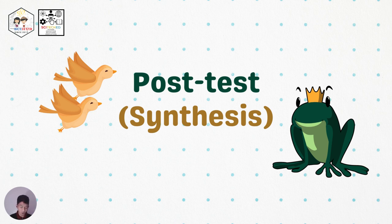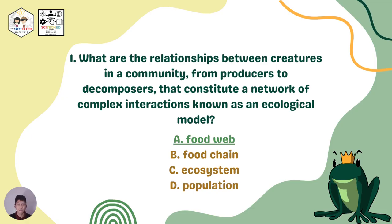Now we will answer the pre-test through our post-test synthesis. Question one: The answer is food web, because food web is a comprehensive account of the species that make up a community — it shows the interactions and the flow of energy through different interconnected food chains. Question two: The lion eats another organism, so it is a consumer; and since its food is another animal, it is a carnivore. The answer is letter B — carnivore and consumer.